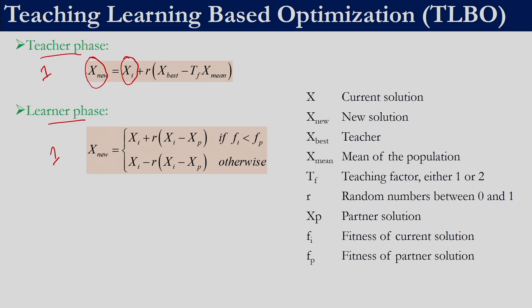x_i is the current solution for which we are generating a new solution; r is a random number between 0 and 1, and it has to be 1×d where d is the number of decision variables. x_best is the best solution in the population, x_mean is the mean of the population, and teaching factor is either 1 or 2 — remember it is not between 1 and 2, it is either 1 or 2. Teaching factor is a scalar value 1×1 irrespective of the dimension of the problem.